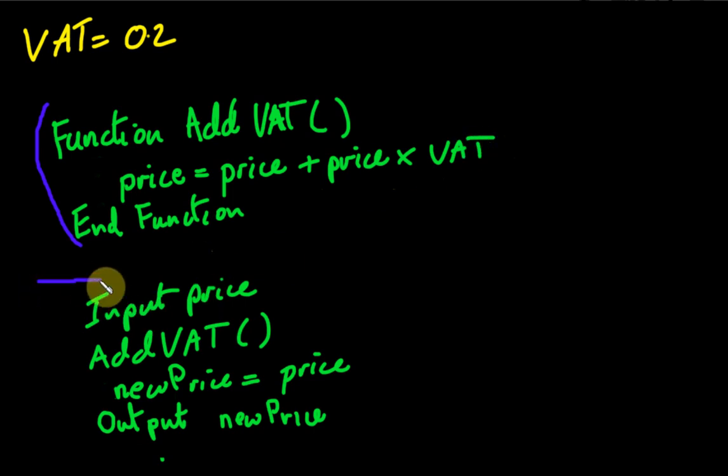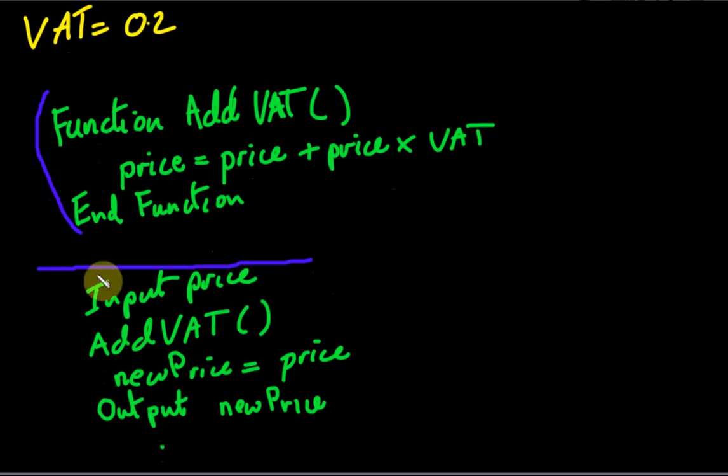Now, down here, then I get my actual code. So my real code starts at this point. And at this point, I first ask somebody to input a price. I then call my function. So what we've got here is this is our call. And by doing that, we are saying, okay, now run this bit. So it's just going to run this code. It's going to change the value of price, this variable here.